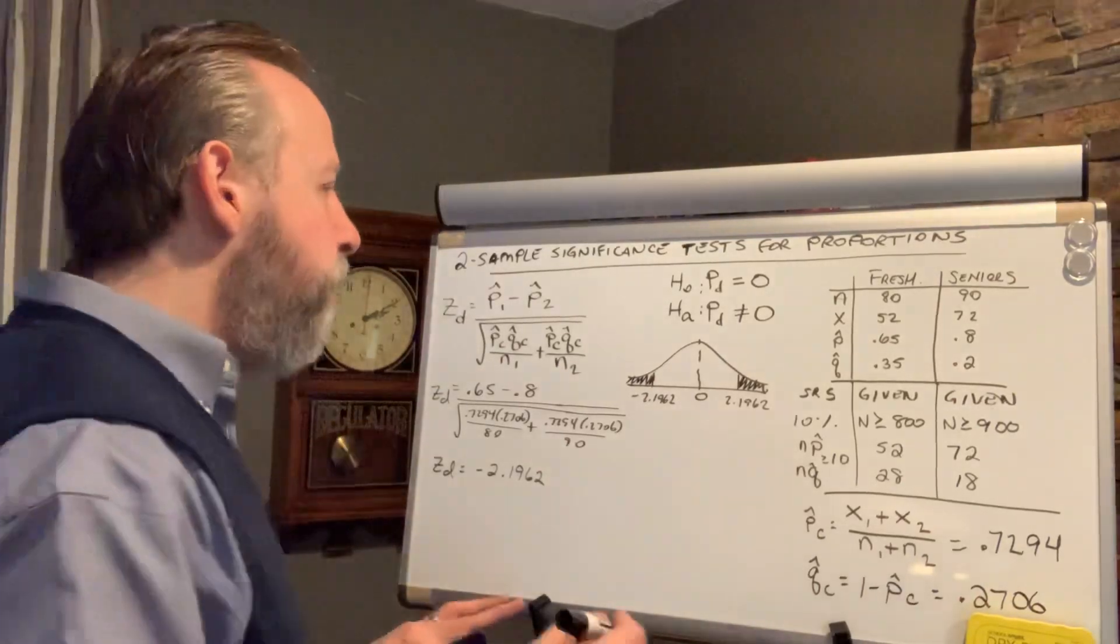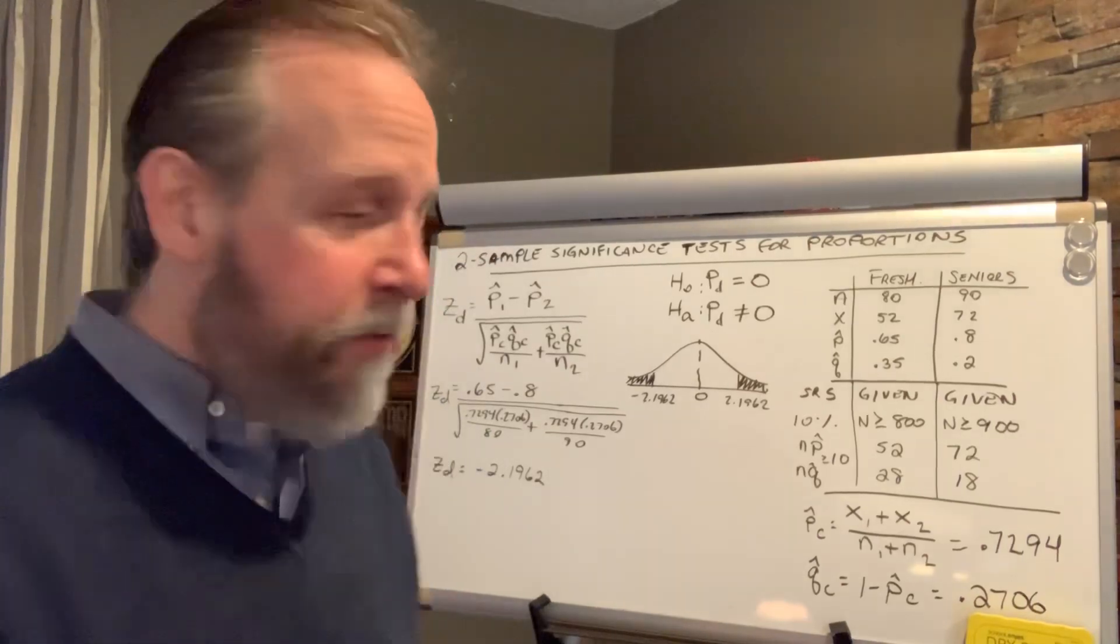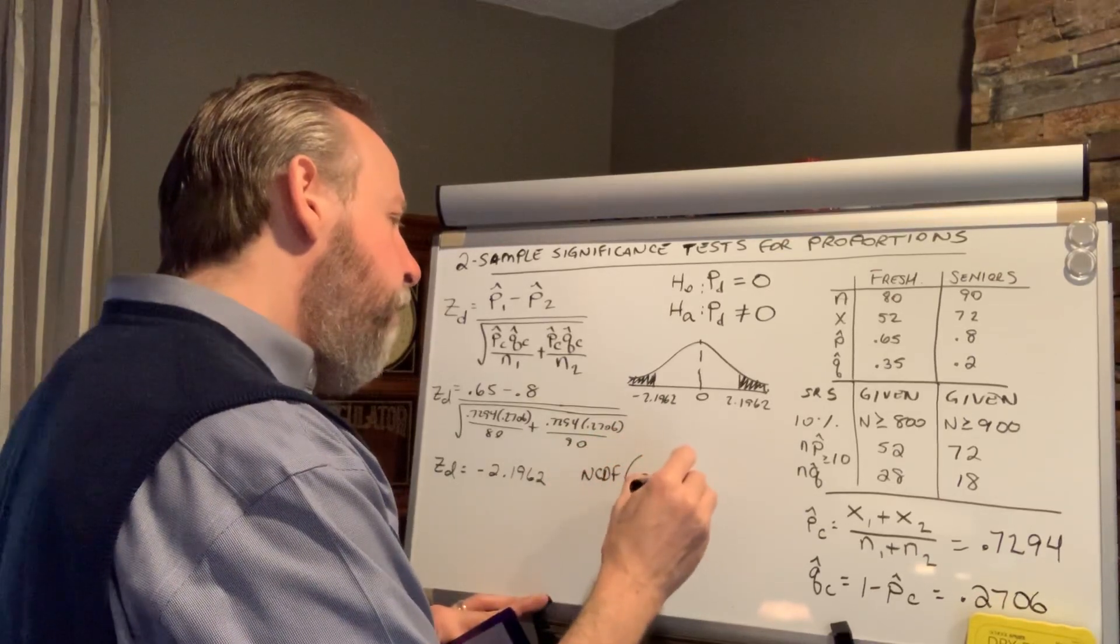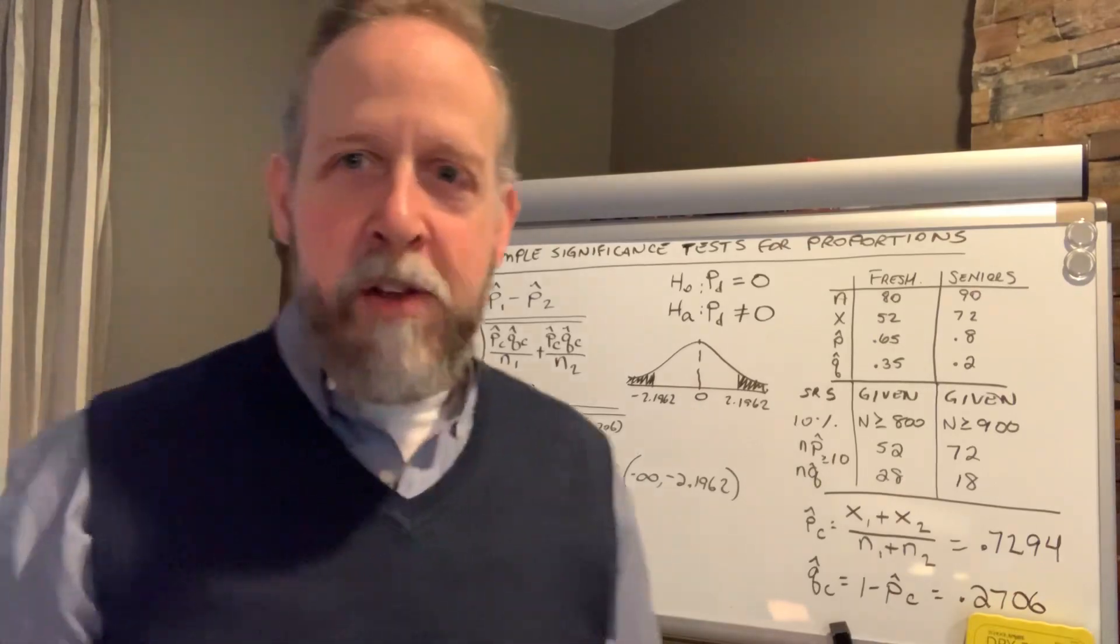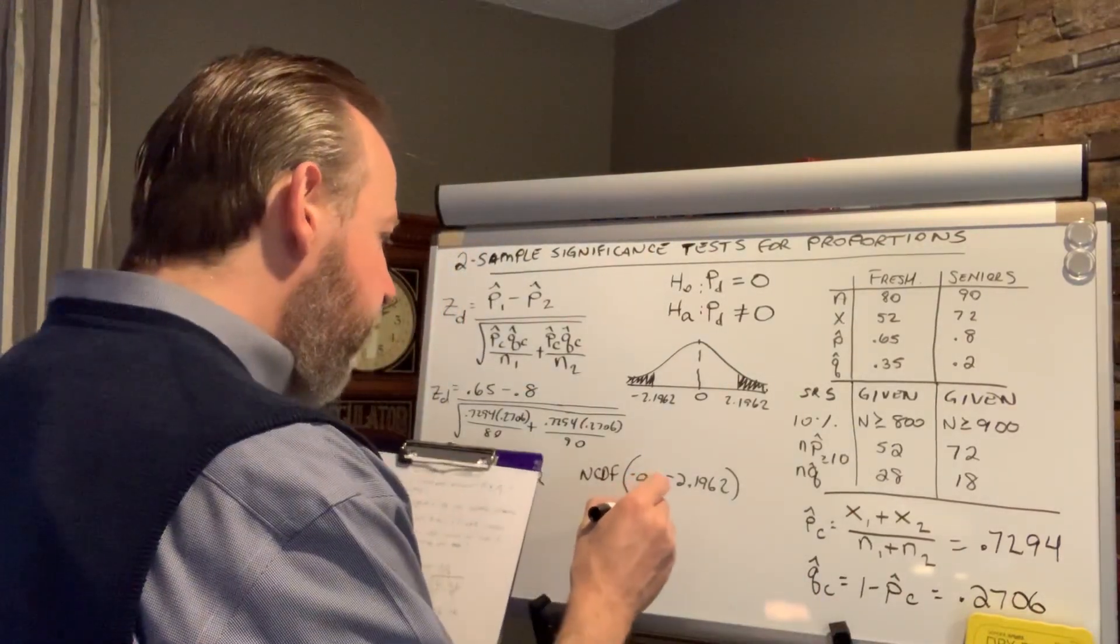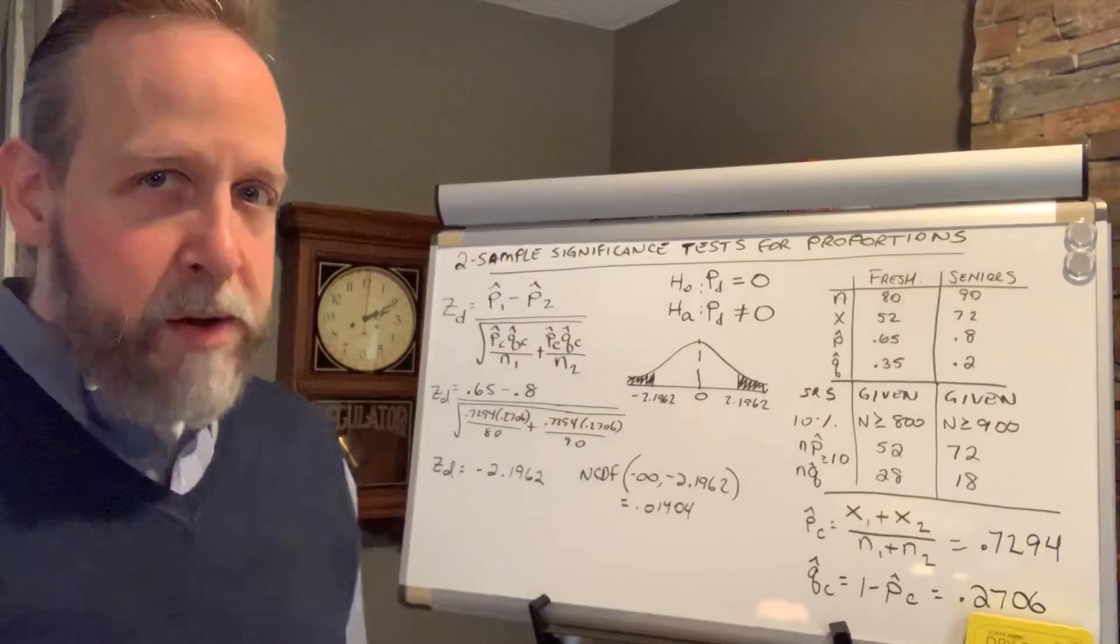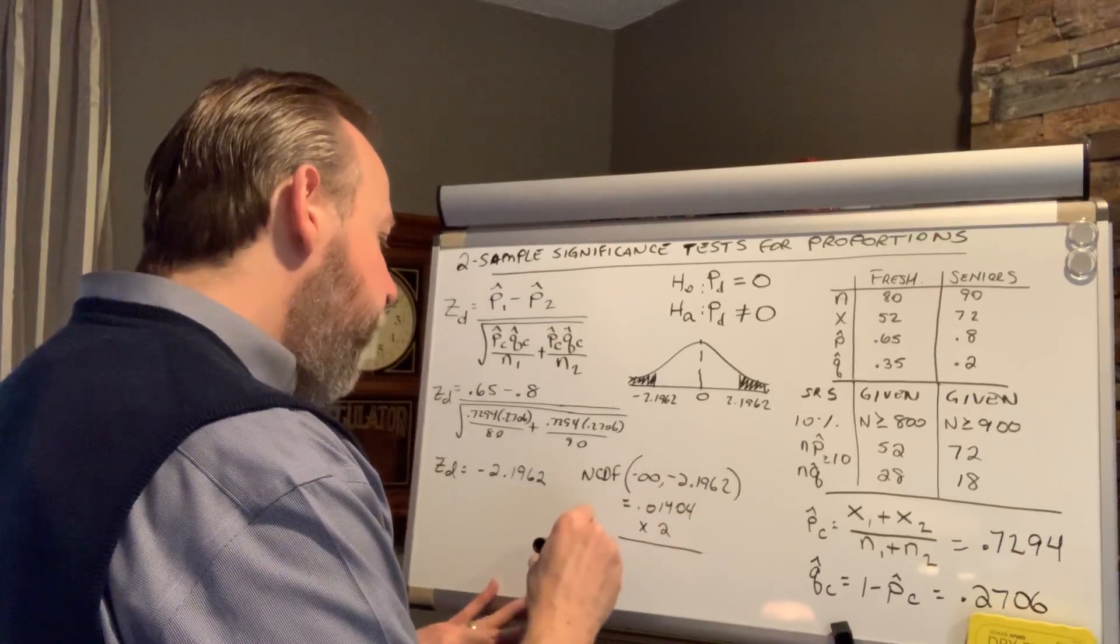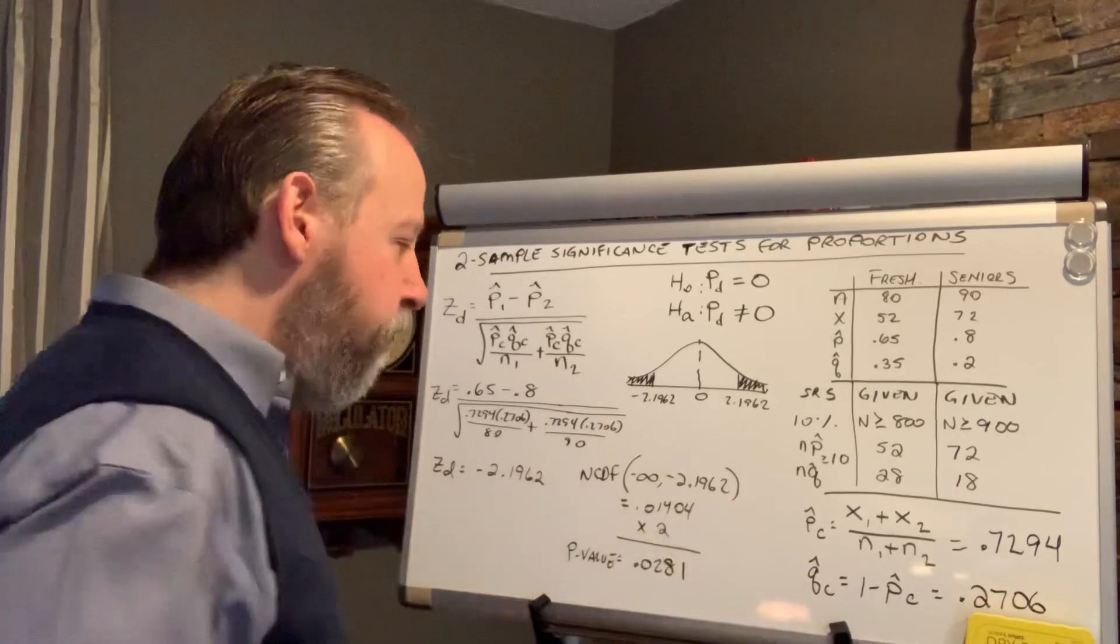Find the area in those tails. Because we have our conditions verified, we've normalized our distribution, so I can use normal cdf, which was always the plan. Normal cdf, I'm going to go from the negative infinite bound to negative 2.1962. If you want to complete the filling in part, zero is the mean, one is the standard deviation, because after all, we've normalized. And I'm going to get my p-value so far of 0.01404. But that's only in the one tail. So I'm doubling it, because I have to. Now my p-value is 0.02808, so 0.0281.